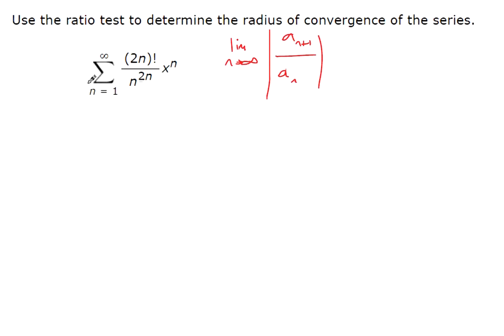So we could start off with the n plus 1th term. This is 2(n+1) factorial over (n+1) to the 2n+1 power, and then that's times x to the n+1. I'm going to put that in the numerator. If you're multiplying by x to the n plus 1, you can just move it upstairs because it's got a 1 underneath it.